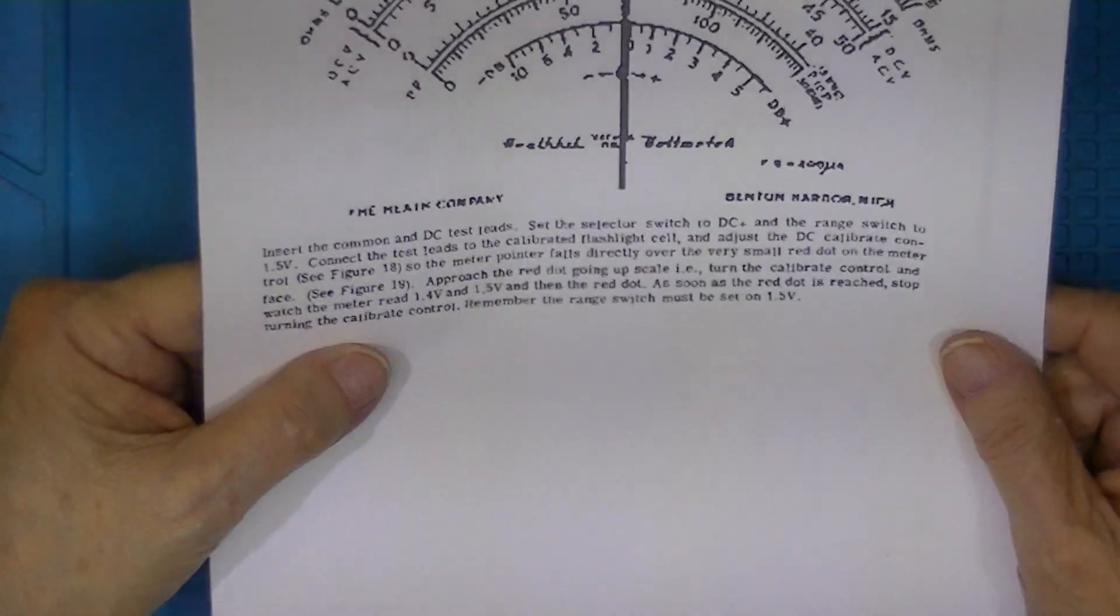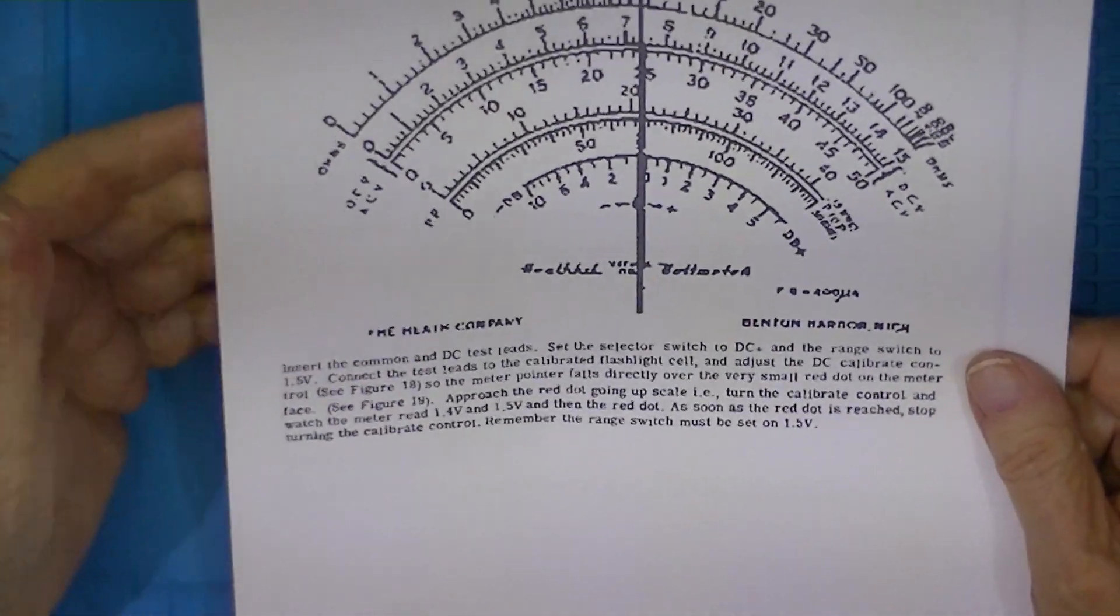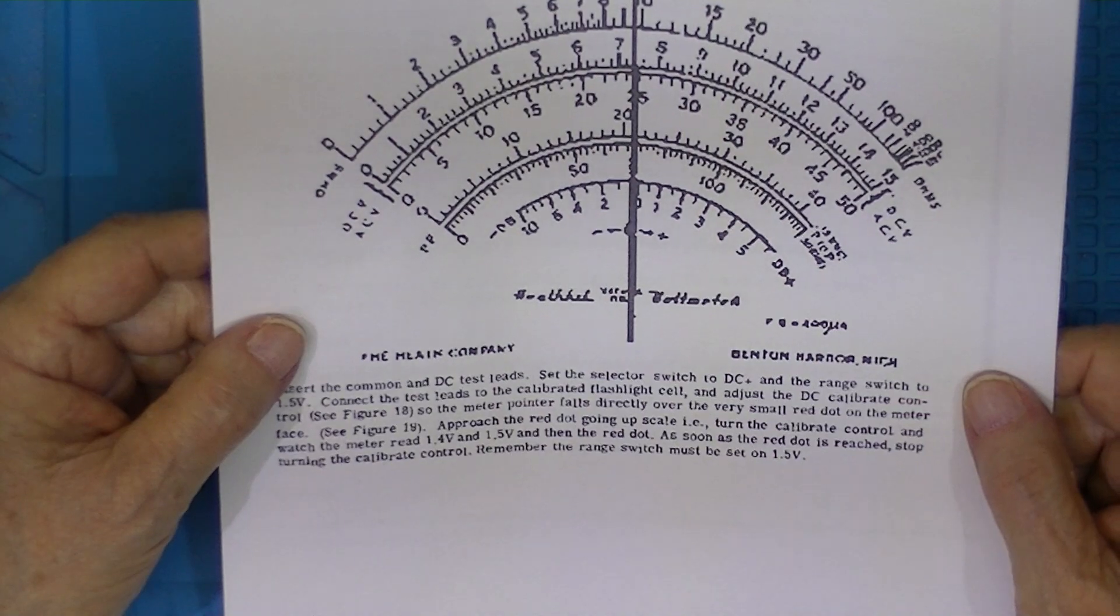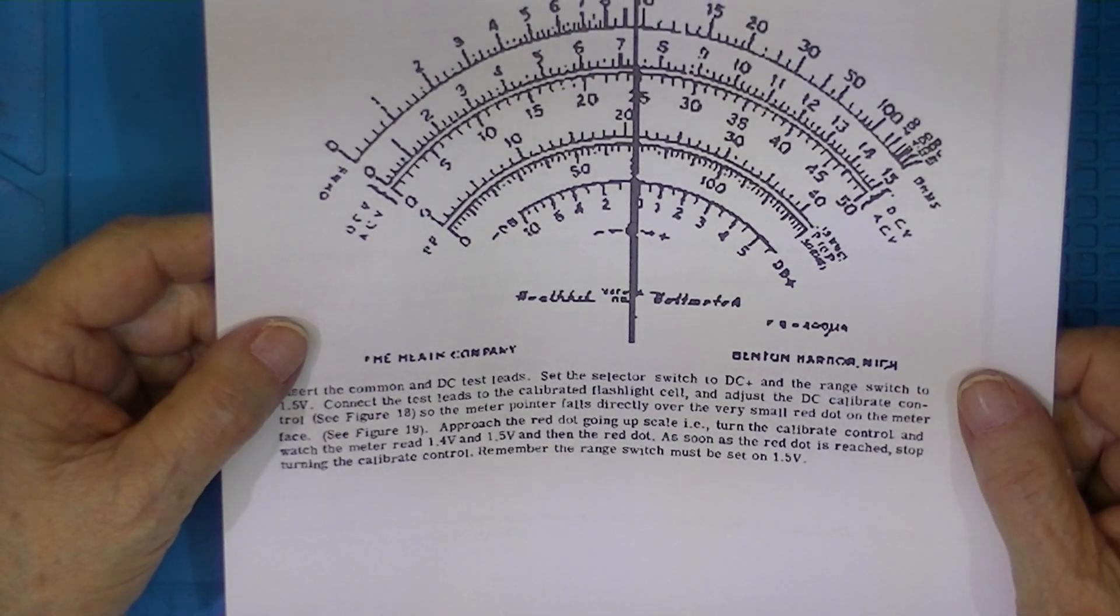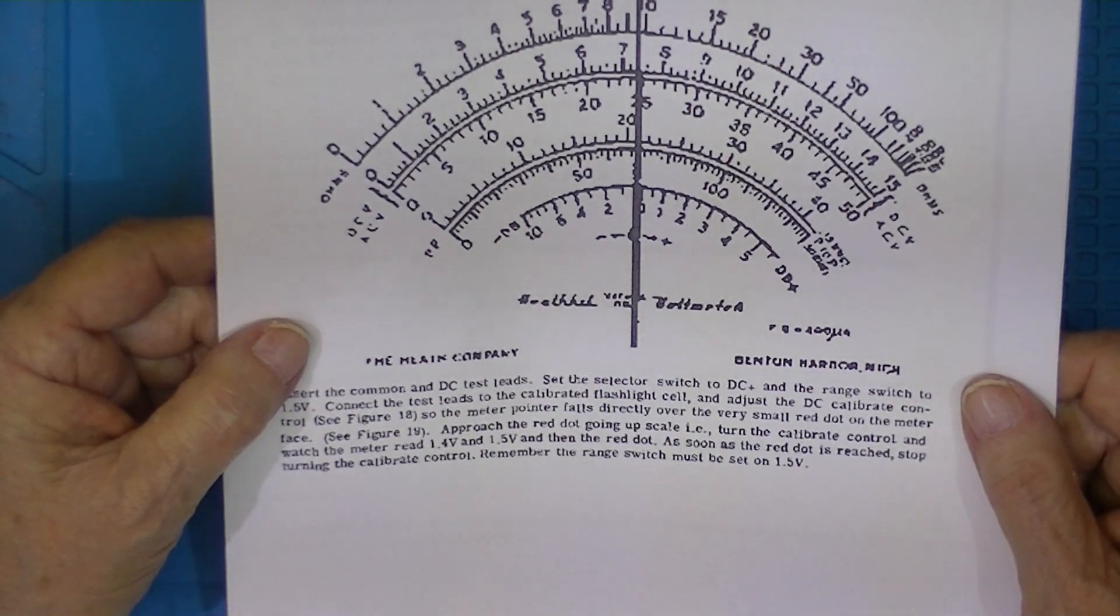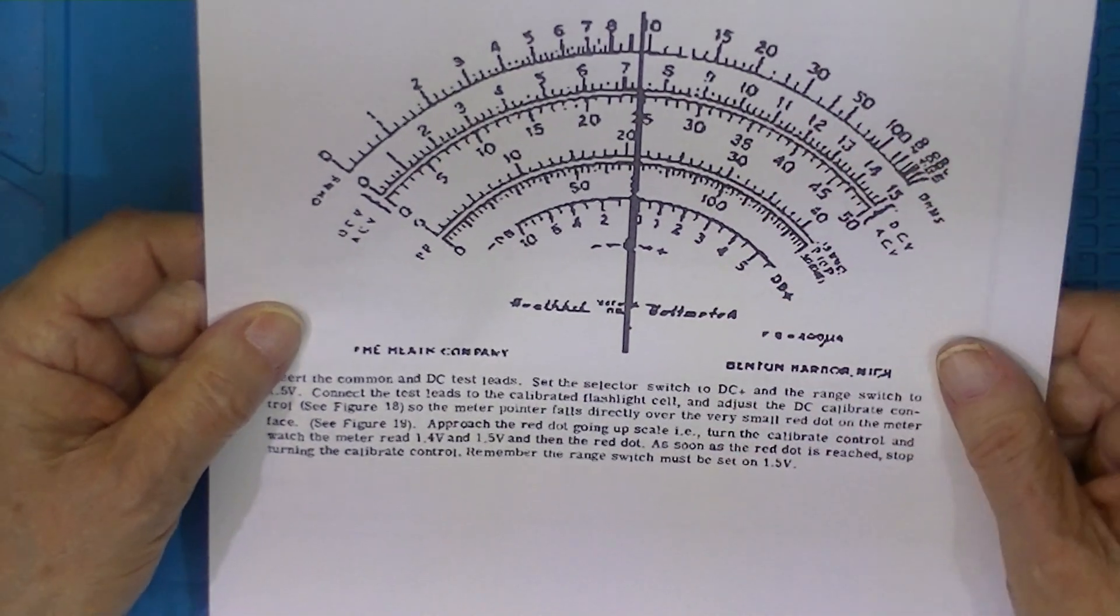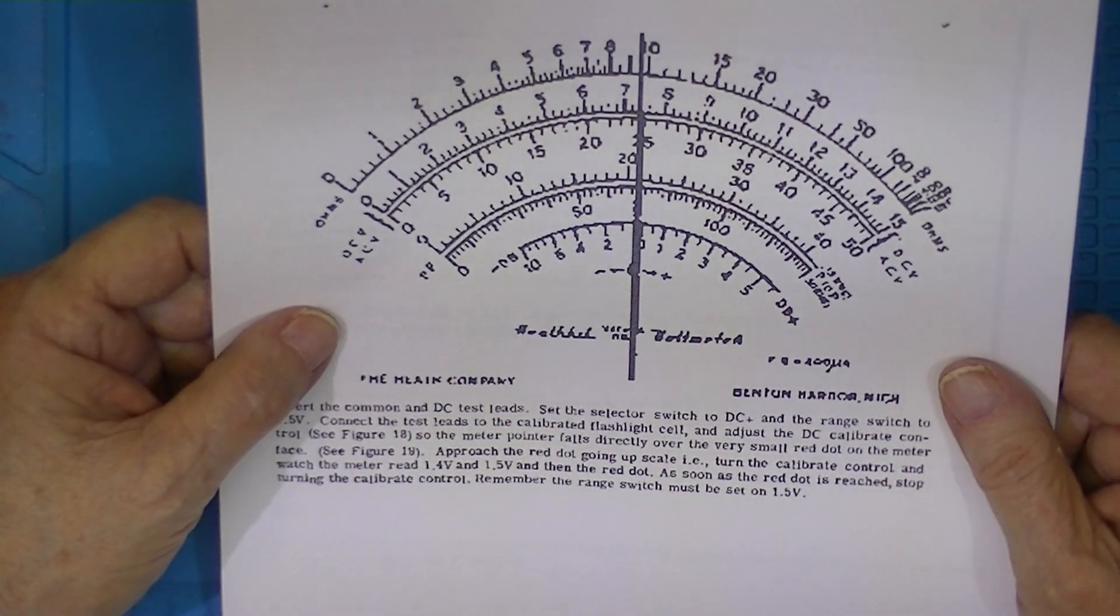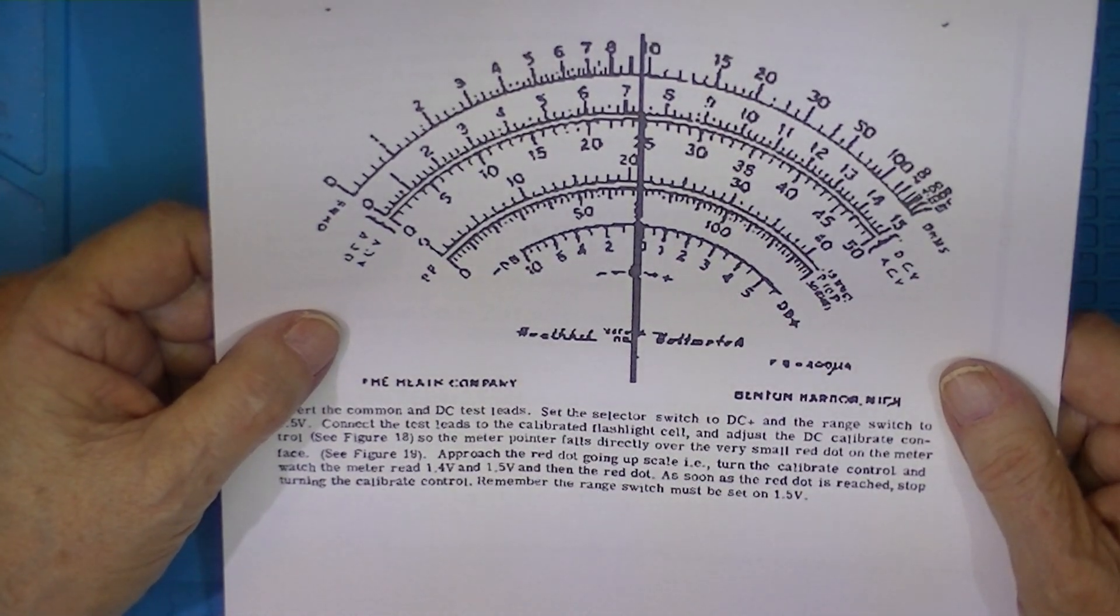So that was the standard in most radio and TV repair shops in the 50s and 60s. Heathkit made some variation of this vacuum tube meter clear up to 1990 when they ceased kit production.